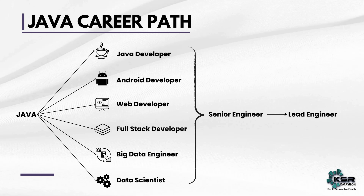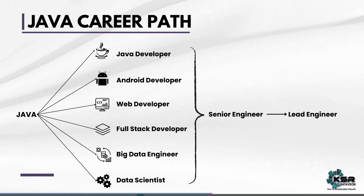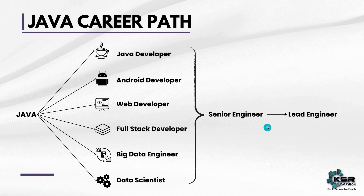Let's now see the Java career path. If you learn Java, you have many career paths to choose from. Java developer is the obvious one. Next is Android developer — most Android apps are built on Java. Next is web development and full stack development. Big data engineers use Java for ETL workloads, and data scientists use Java for machine learning workloads. These are not an exhaustive list; there are multiple other paths available. Once you gain good experience in these roles, you can be promoted to senior and then to lead engineer.